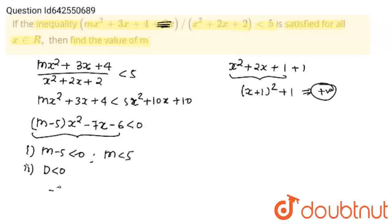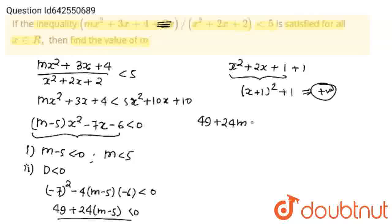Which means that minus 7 square, b square minus 4 into m minus 5 into minus 6 should be less than 0. So this will become 49 minus 4 minus 6 will become plus 24, 24 times m minus 5 should be less than 0.